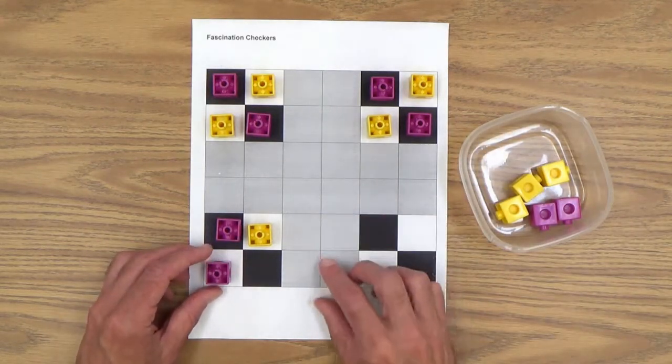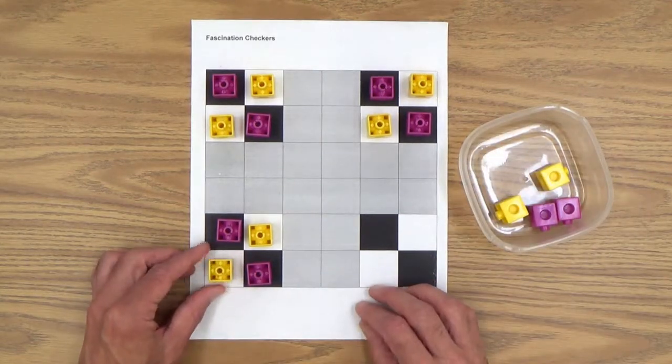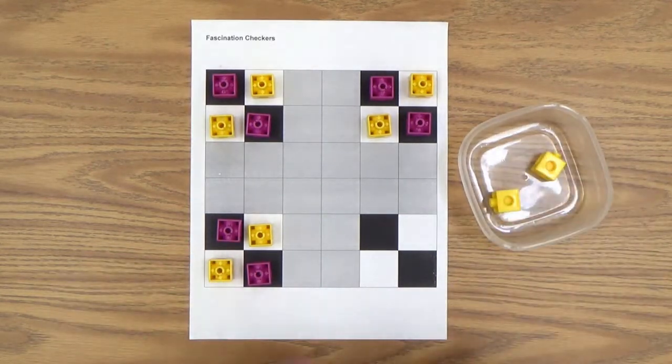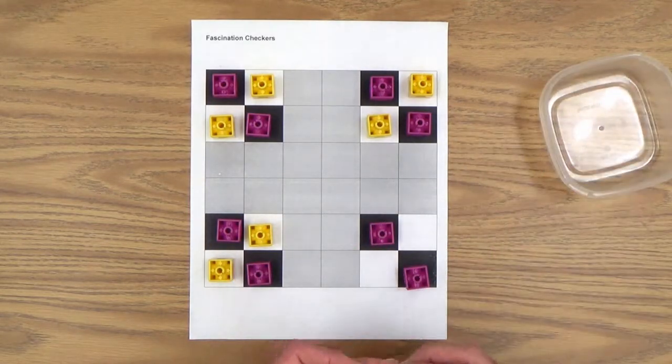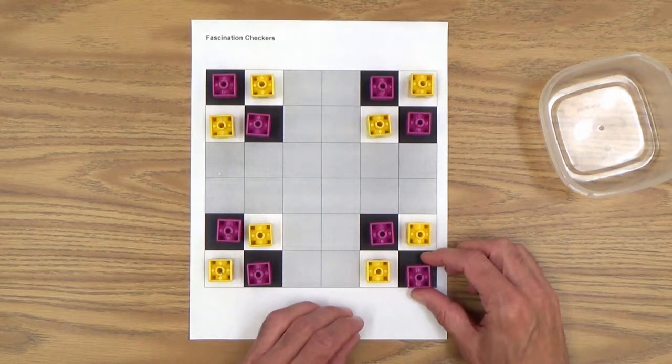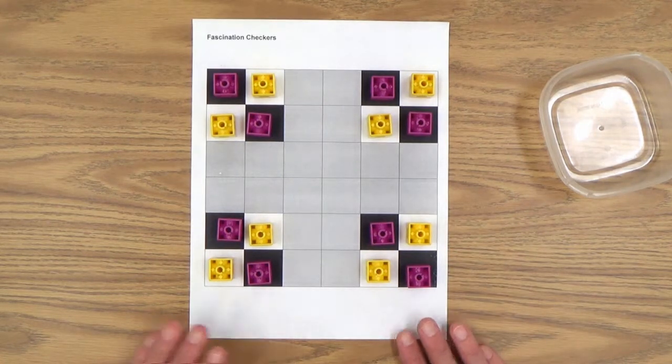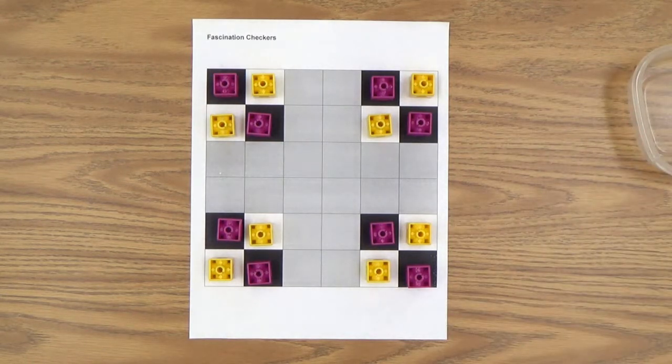As you can see, nothing gets set up on the gray here, just on the black and white squares. And now that you're set up, the game board is set up, you're ready to actually play the game.